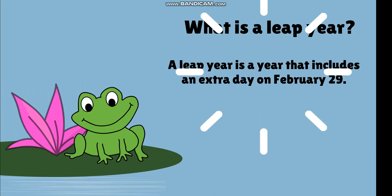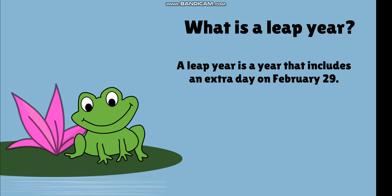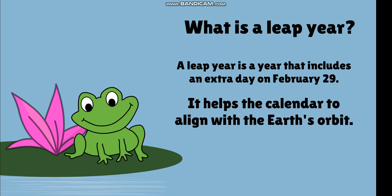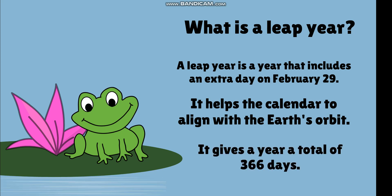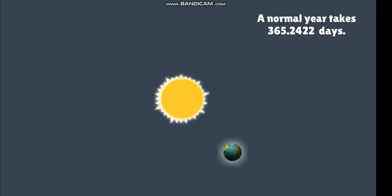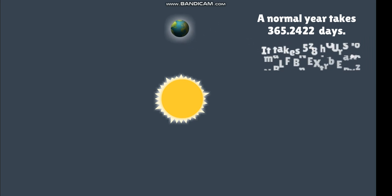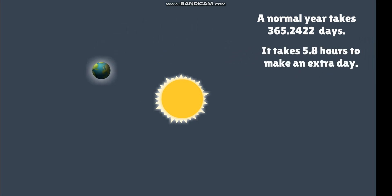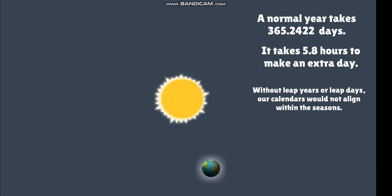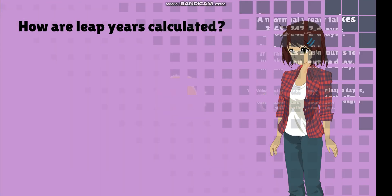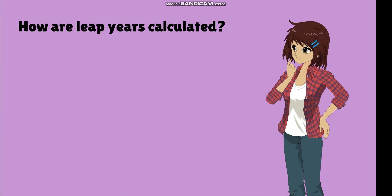What is a leap year? A leap year is a year that includes an extra day on February 29th. It helps the calendar align with the Earth's orbit around the Sun, giving a year a total of 366 days. A normal year takes 365.2422 days, and it takes 5.8 hours to make up an extra day, which becomes a leap day. Without leap years or leap days, our calendars would gradually shift out of alignment with the seasons. That's how a leap year really works.